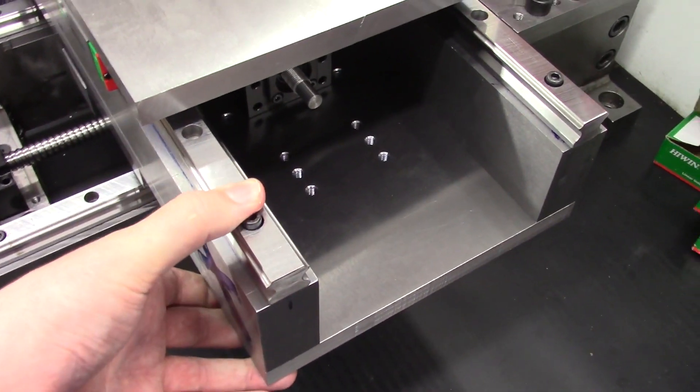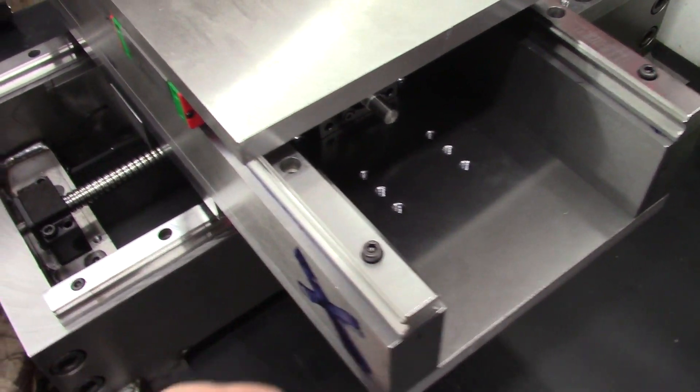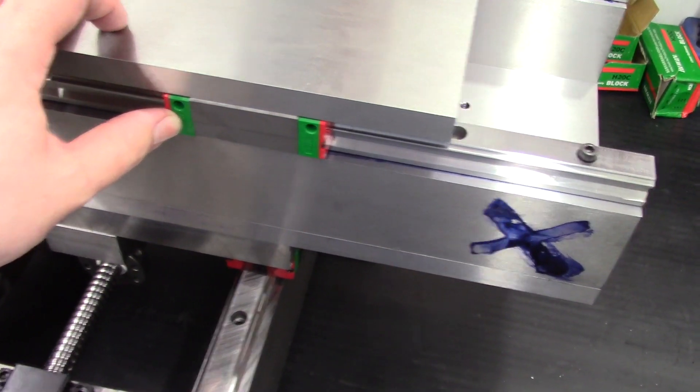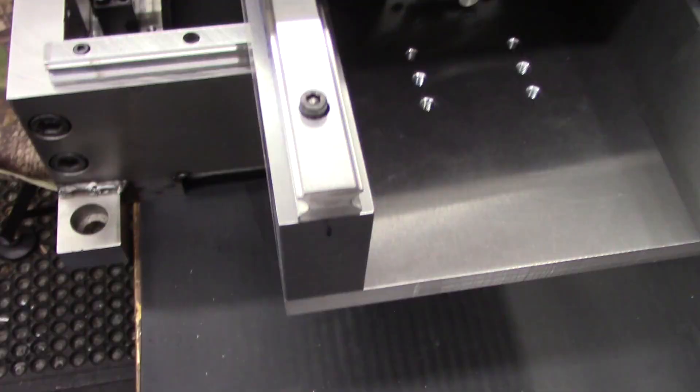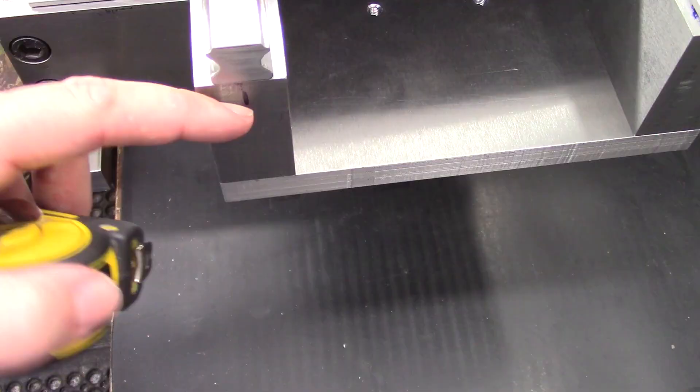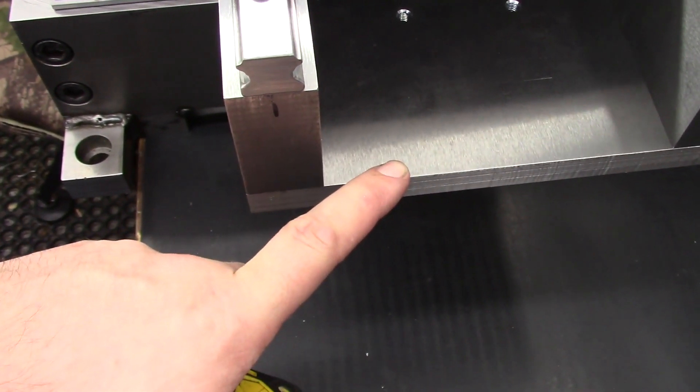And we come up to the x-axis table. Again, linear rails and carriages bolted on nice thick steel. So this steel here is 30mm thick by 60mm, and it's on a 20mm thick base.